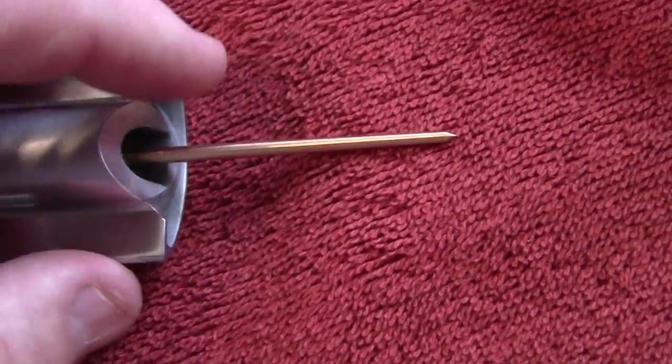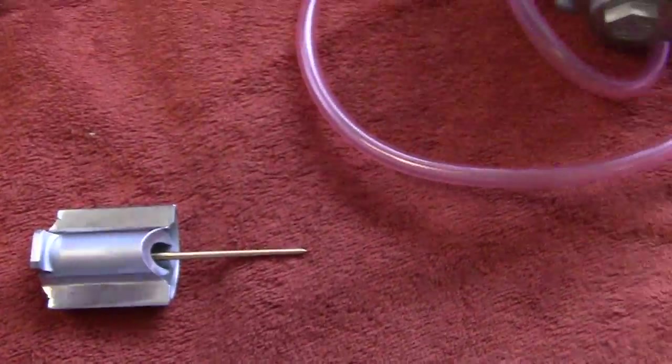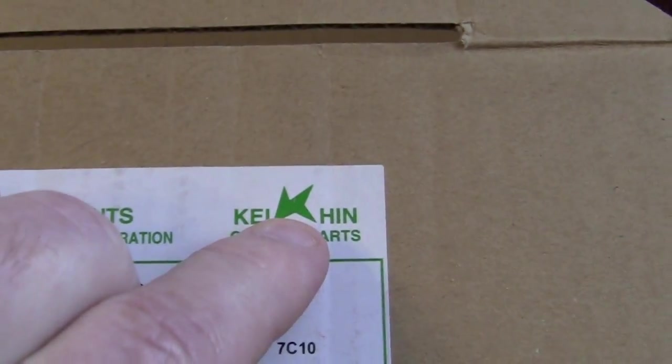This must unscrew or something to get it out, but it will have a tiny Keihin emblem on it, which is right here. It will have that little tiny emblem on it.